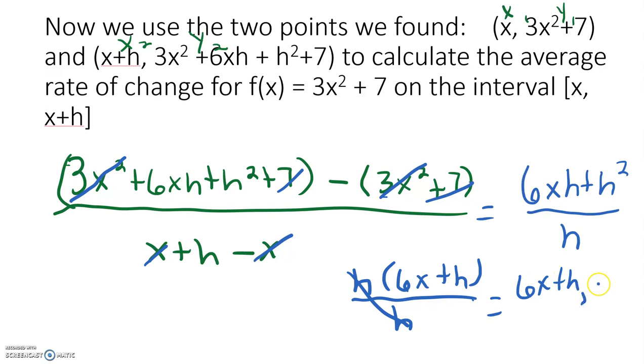Again, we have to write the disclaimer that h cannot equal zero since it's in the denominator. So the average rate of change for this one is 6x plus 3h, where h does not equal zero.